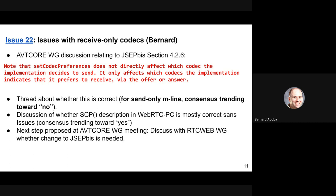The current tendency is that if we're talking about a send-only M line, it doesn't really make sense that set codec preferences is all about what's being received. So there's a sense that something is wrong with JSEP BIS here. People looked at set codec preferences and generally seem to think it makes sense. The sentiment in ABT core is that JSEP BIS is more the problem. The proposed next step is to post something on the RTC web mailing list about whether we need to adjust those two sentences.